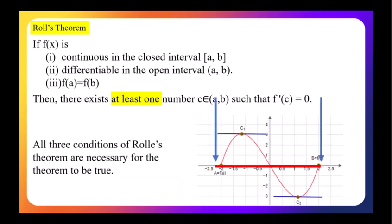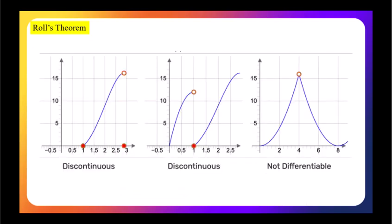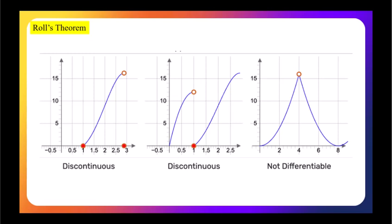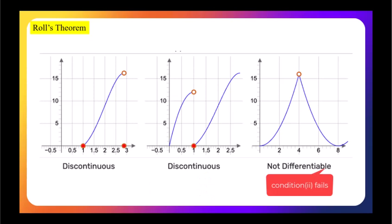Please note that f(a) and f(b) are equal. This picture shows conditions where Rolle's theorem is not applicable. In the first figure, the function is not continuous at the endpoint of the interval. In the second figure, the function is not continuous at some middle point. In the third figure, the function is not differentiable at x equals 4. That is why Rolle's theorem does not apply in these three cases. Differentiability is required on the open interval, excluding endpoints, to allow for corner points like that in the third figure without affecting continuity.